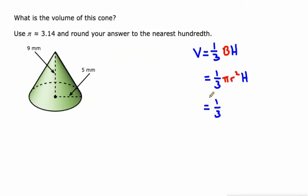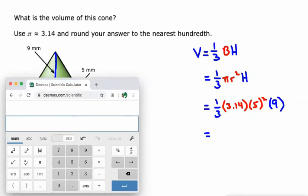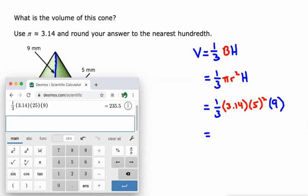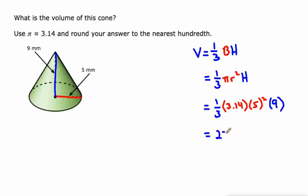One third — we're going to use 3.14 for pi. The radius here is 5, so 5 squared, which is 25, times the height, which is 9. I'm just going to jump straight to the calculator and let it do the work — it's just a bunch of multiplications. One third times 3.14 times 25 times 9 gives us 235.5 cubic millimeters.